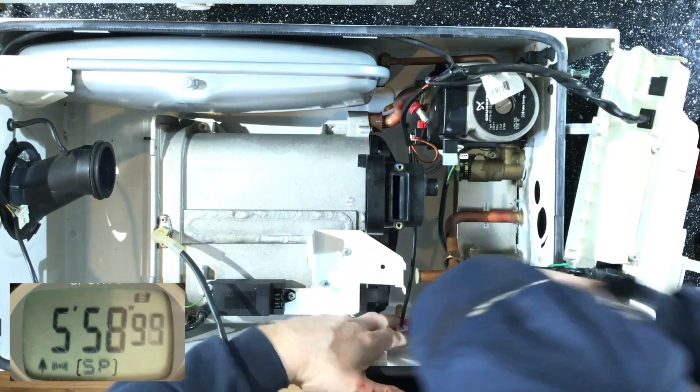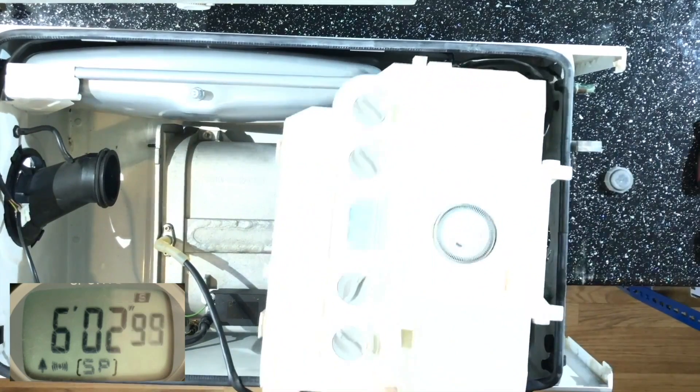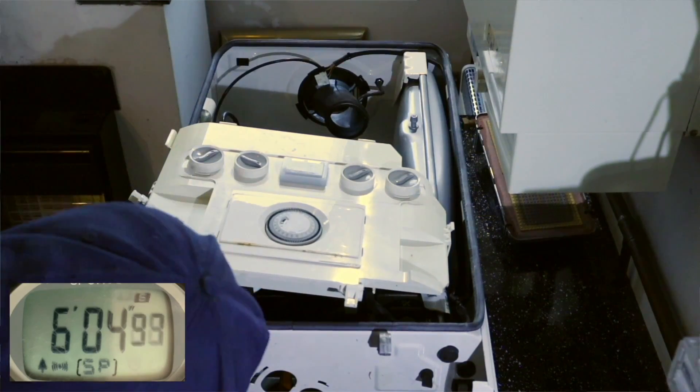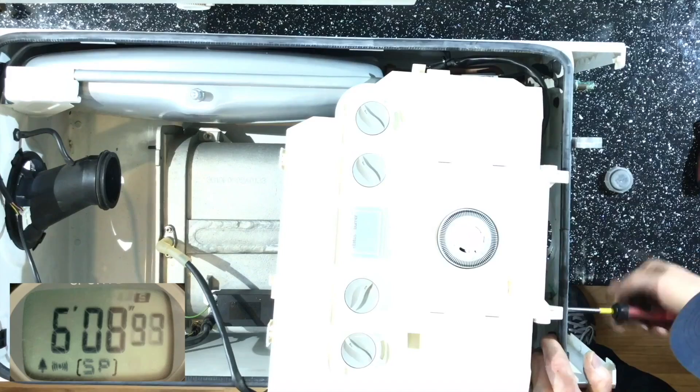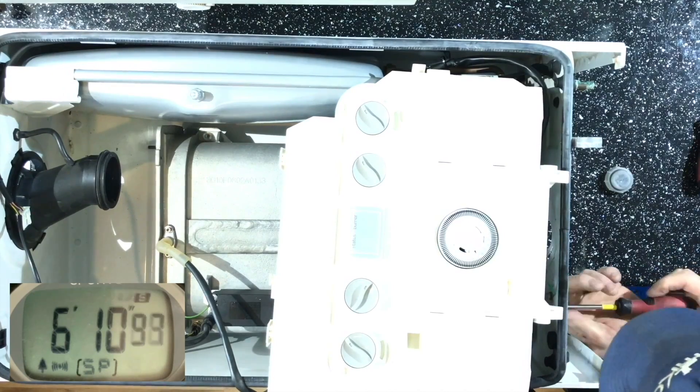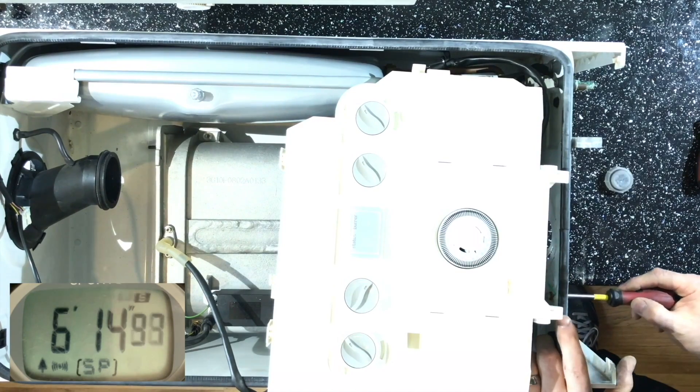So what happens is when you open the tap, the flow turbine then sends power to the PCB. The PCB then operates this diverter valve head and then turns it into heating or water, depending on whether the tap is running or not. It's pretty straightforward as that.